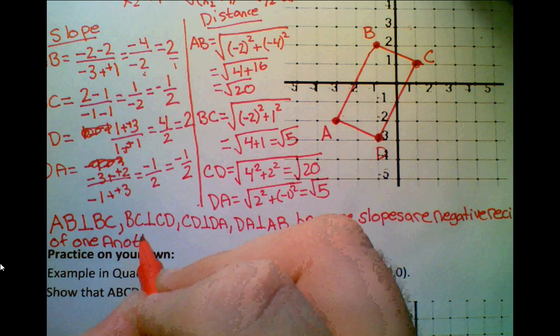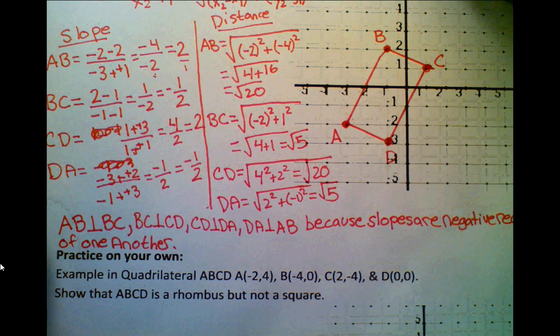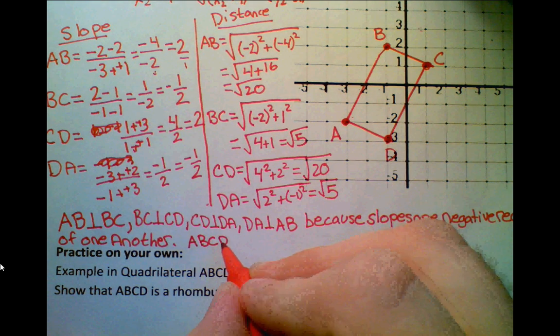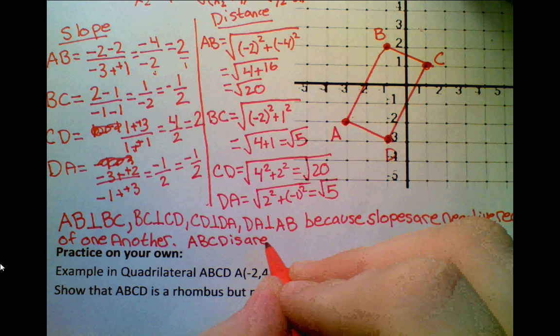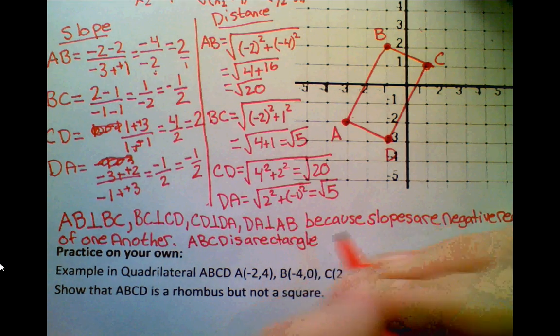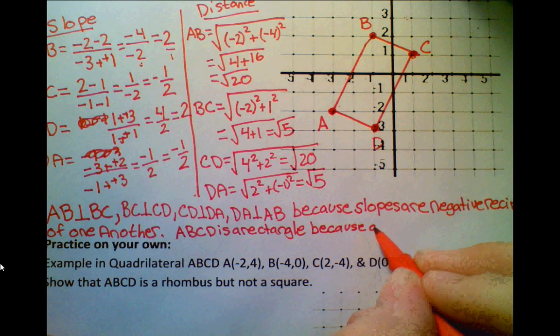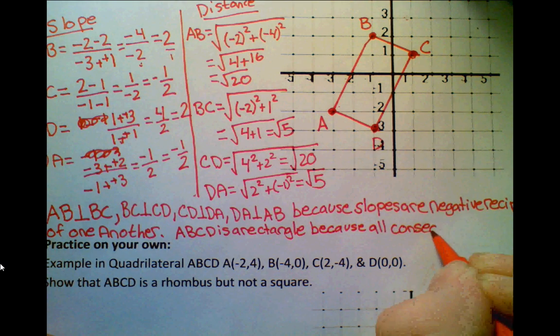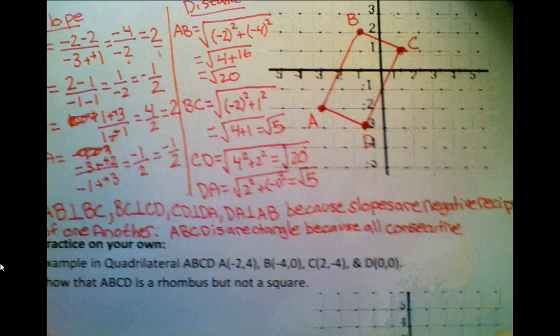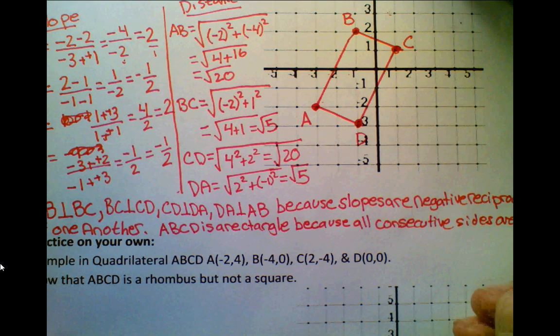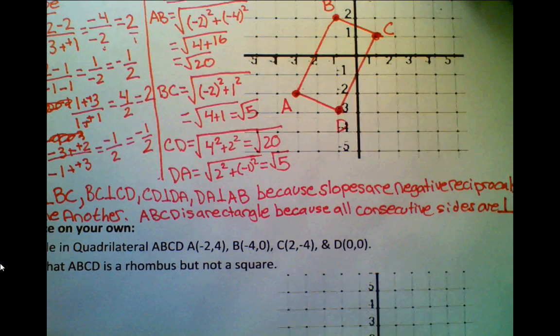So now, we know that all the consecutive sides are perpendicular to each other. So now, what we can say is that ABCD is a rectangle because all consecutive sides are perpendicular to each other. So now, we're done with the first part.